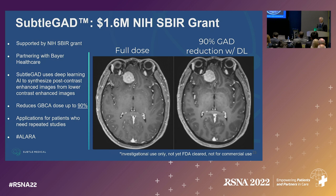When we hear the term ALARA — as low as reasonably achievable — we think about it in terms of radiation. But we should really think about it much more broadly: how much do we need of anything? How much do we need of contrast? How much do we need of imaging time?